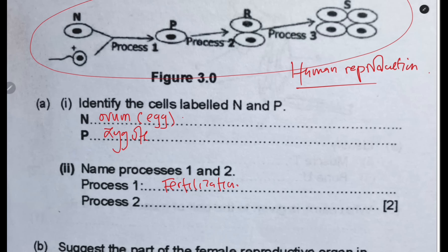For process two: when fertilization has taken place, the zygote starts dividing, and that division is mitosis. Mitosis is where one cell divides into two identical cells. Since we are talking about humans — if it were in amoeba, we would look at binary fission — but here this is mitosis.